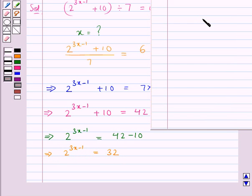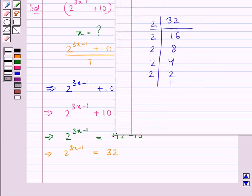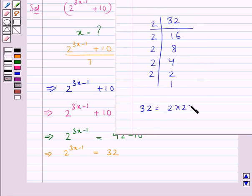Now let's factorize 32: 2 times 16 is 32, 2 times 8 is 16, 2 times 4 is 8, 2 times 2 is 4, 2 times 1 is 2. So we say that 32 is equal to 2 multiplied to itself 5 times, that is 32 is equal to 2 to the power 5.